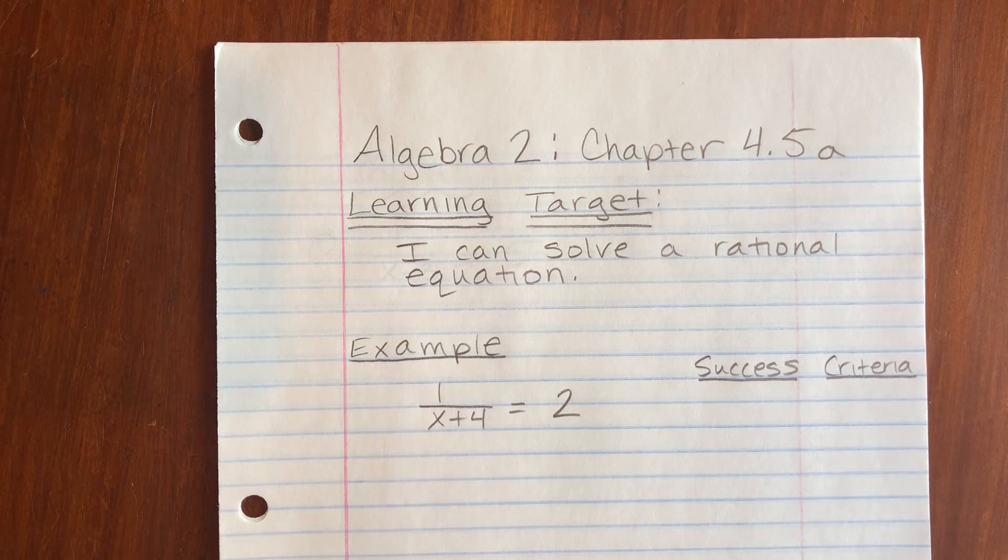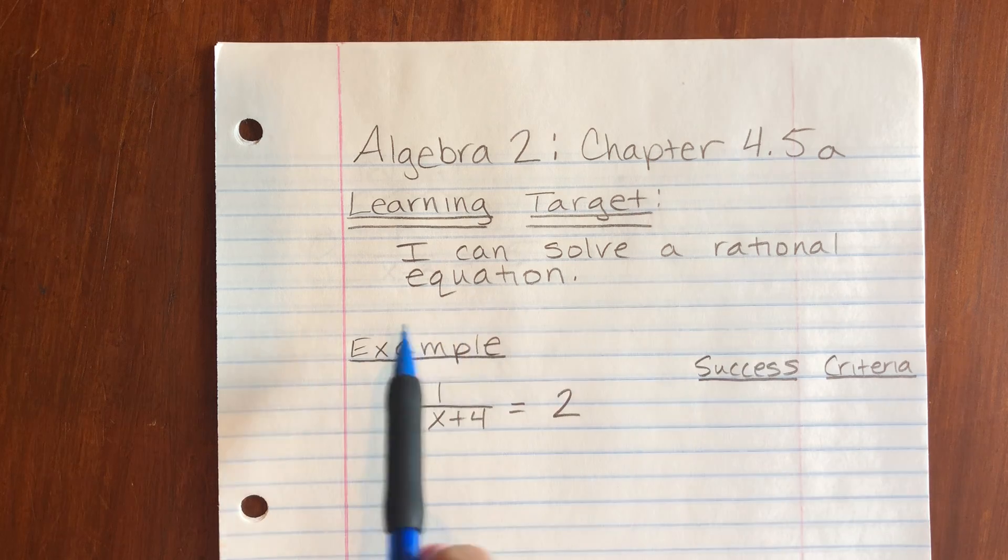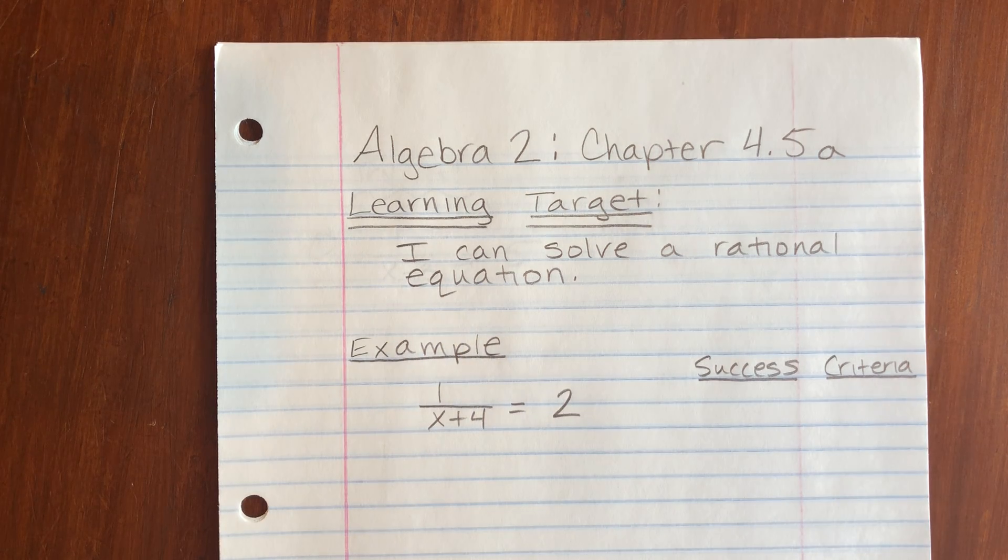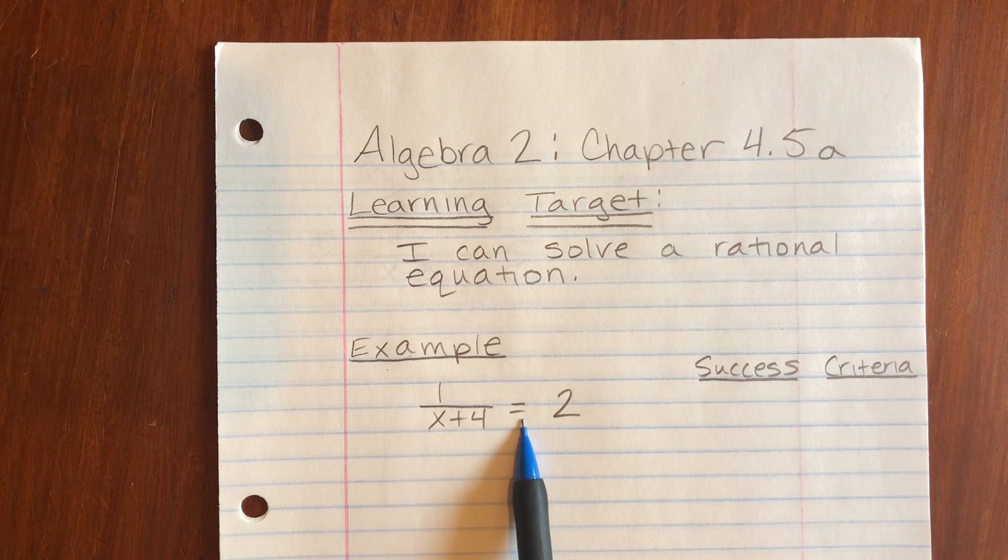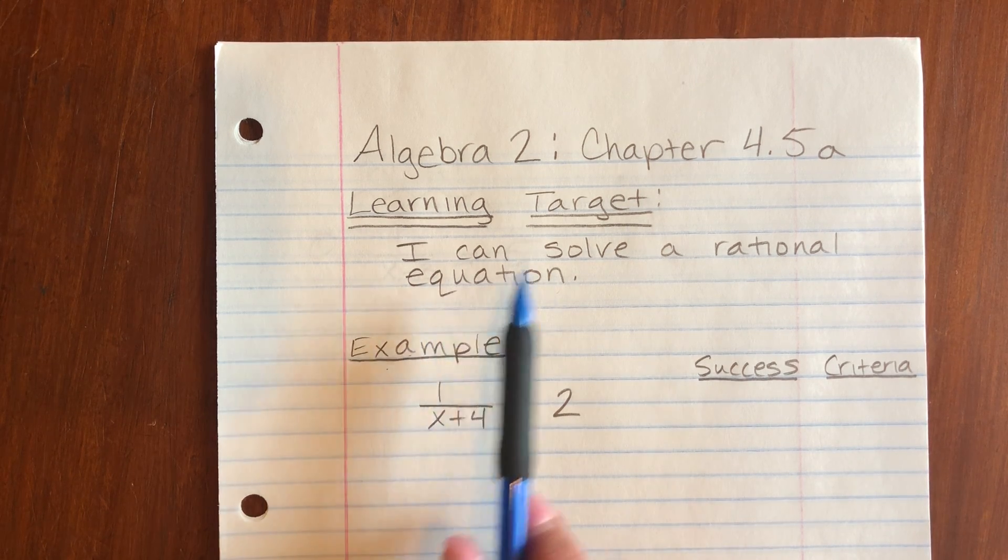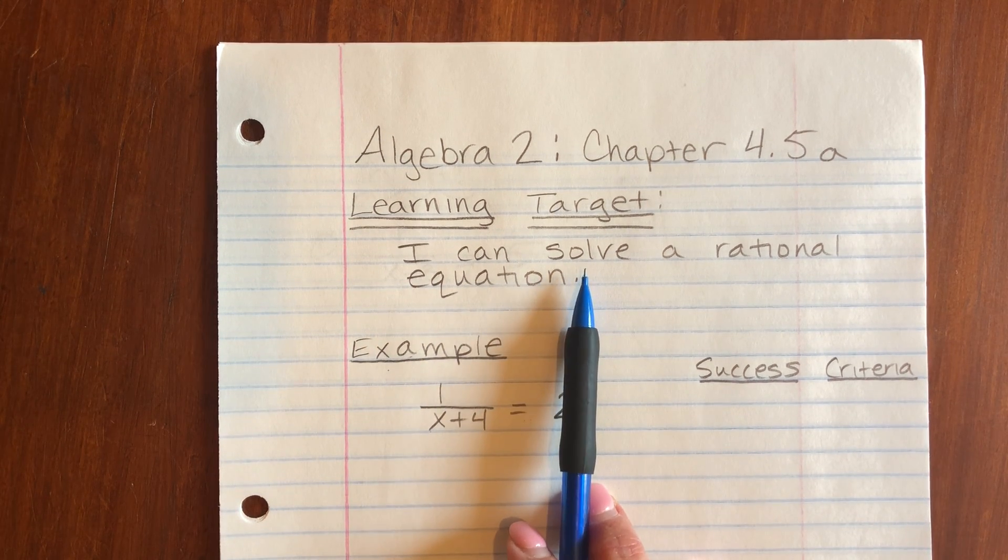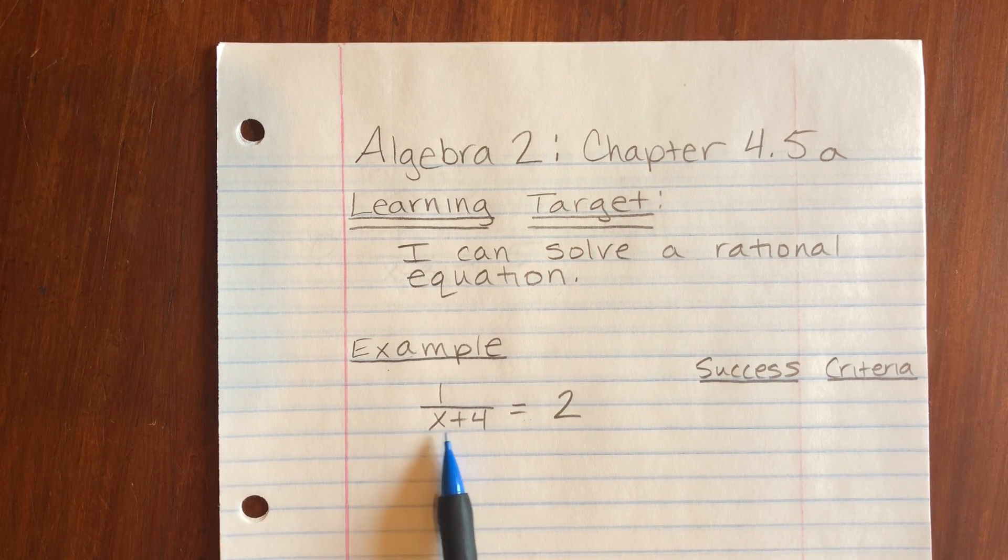So today we're looking at the learning target: I can solve a rational equation. We've been looking at lots of rational expressions, but today we're actually given an equation with an equal sign. That means we're going to solve for the variable, solve for x.